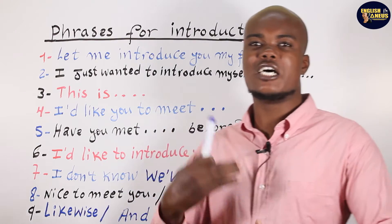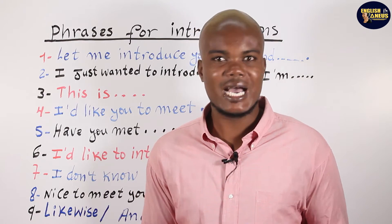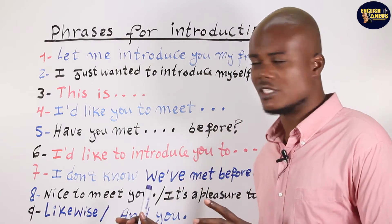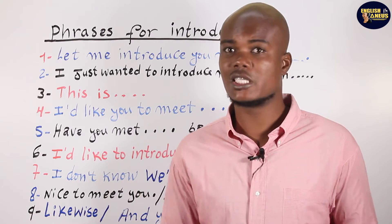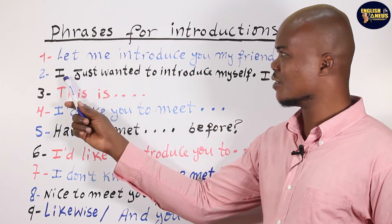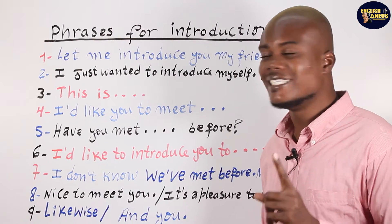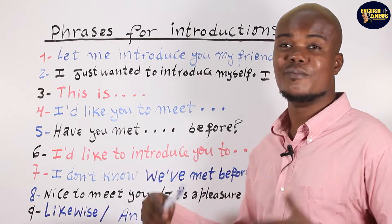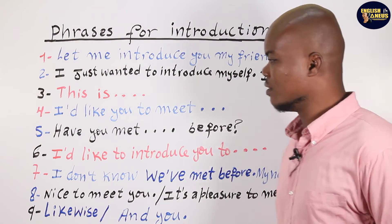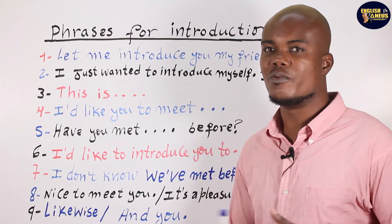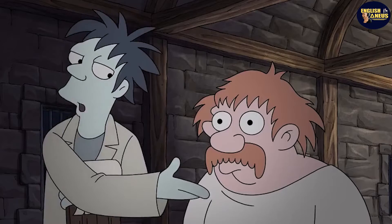Now let's get back to how to introduce yourself directly to someone. Remember, everything I said so far was about how to introduce one friend to another friend. Now, how can you introduce yourself directly to someone? Do you remember? The first sentence was: 'I just wanted to introduce myself. I am [name].' That was one of the first phrases I showed you. Now there's more — another way to say it when approaching someone directly is: